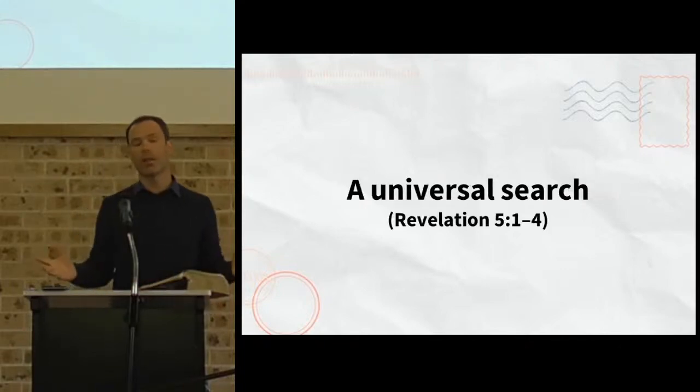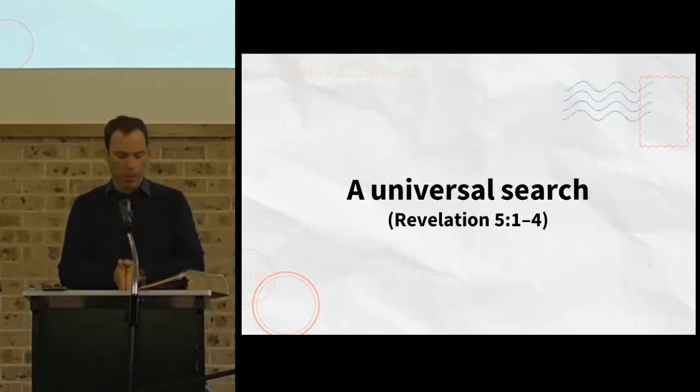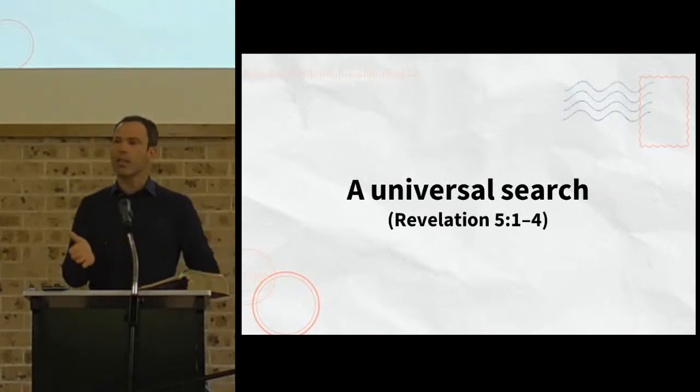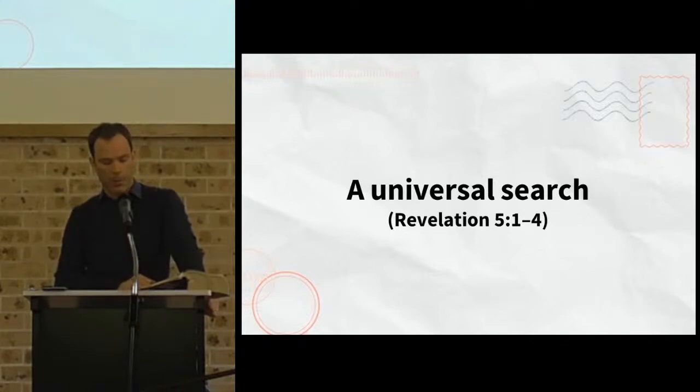Until now, all has been well in John's vision of the throne room. But then here we see there's a problem. God sits on the throne with a scroll on his hand, but no one can be found anywhere who is worthy to open that scroll. And John is sent into a deep grief. I wept and wept. Verse 4. It all seems very dramatic, doesn't it?